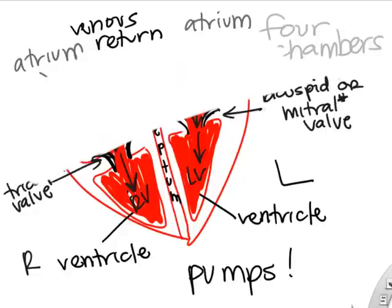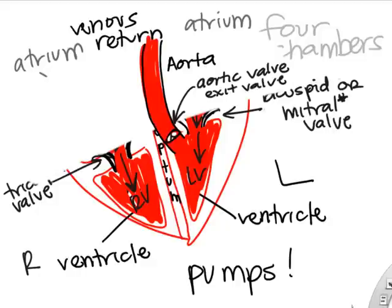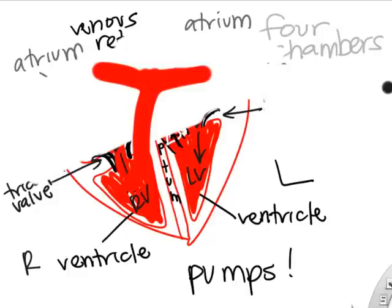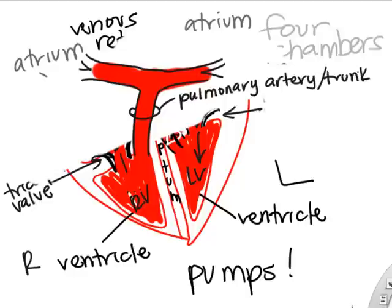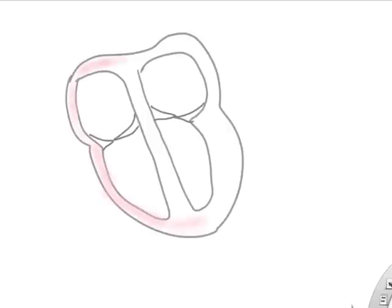When we empty the heart, there are exiting tubes coming out. Out of the left ventricle is a giant artery called the aorta. A one-way valve called the aortic valve separates the left ventricle from the aorta — it opens so blood flows into the aorta. The right ventricle pumps into the pulmonary artery, also called the pulmonary trunk, which goes to the lungs. It has a one-way pulmonary valve.